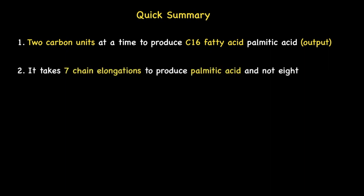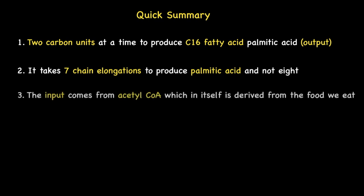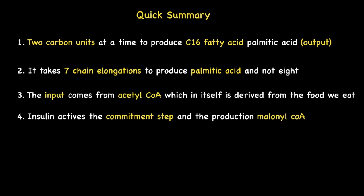It takes, in total, seven chain elongations in order to achieve this. The input comes from acetyl coenzyme A, which itself is derived from the food that we consume. Insulin is the hormone which activates the commitment step, and more specifically, the expression of the enzyme acetyl-CoA carboxylase, which produces malonyl-CoA.